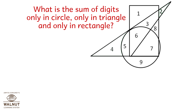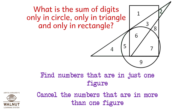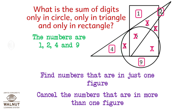What is the sum of digits only in the circle, only in the triangle, and only in the rectangle? Find the numbers that are just in one figure — cancel the numbers that are in more than one figure. Cancel out 5, 6, 3, 8, and 7. That leaves us with 4, 9, 2, and 1. Now, how many digits are in the circle? Just one — so the sum of the digits is 9 for the circle.